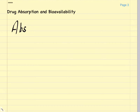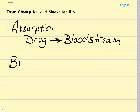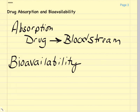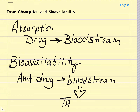Let's talk about drug absorption and the concept of bioavailability. The term absorption refers to the movement of drug into the bloodstream after it's been administered to a patient. The term bioavailability refers to the actual quantity of drug administered that enters the systemic circulation and eventually reaches the intended target cells. If a drug has a bioavailability of one, that means 100% of the drug was absorbed.